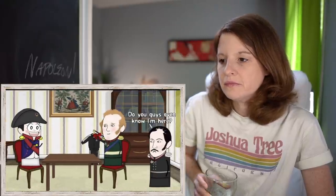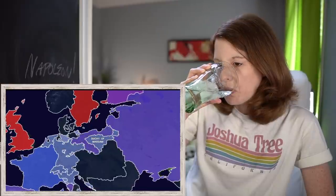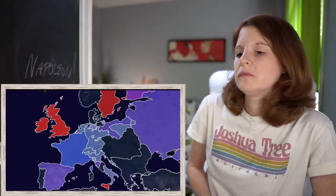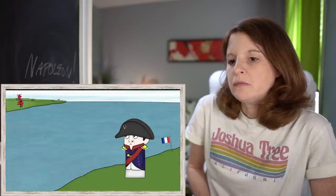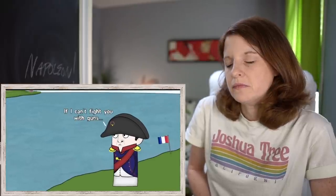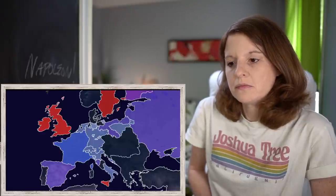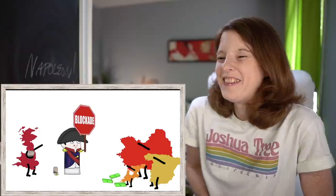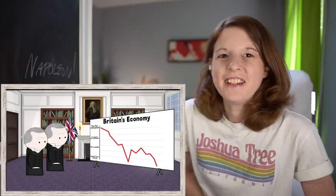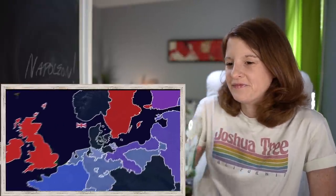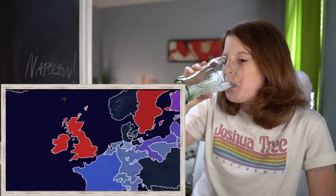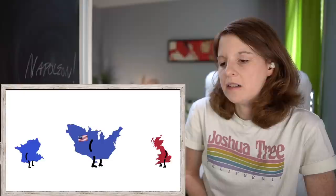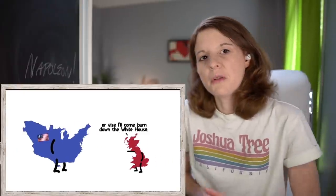Prussia lost an enormous amount of territory to French client states. Only the UK remained as the last major threat to Napoleon, constantly funding his enemies and using their powerful navy to wreak havoc on French trade and overseas colonies. Napoleon said if he couldn't fight them with guns, he'd fight them with money. In 1806 he announced the Continental System — a total shutoff of the UK from continental trade. The British economy did take a hit, but they managed to stay afloat by simply increasing trade with other parts of the world. Many neutral countries found themselves stuck between the two European superpowers.